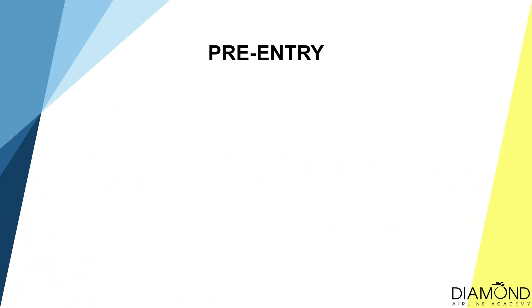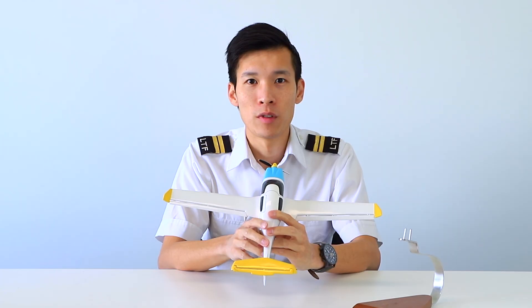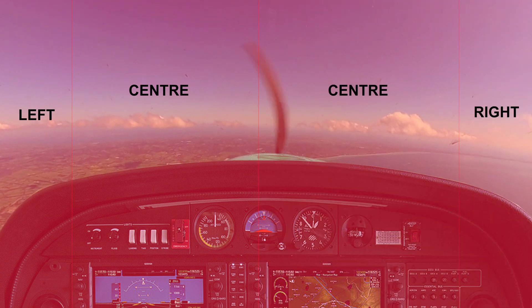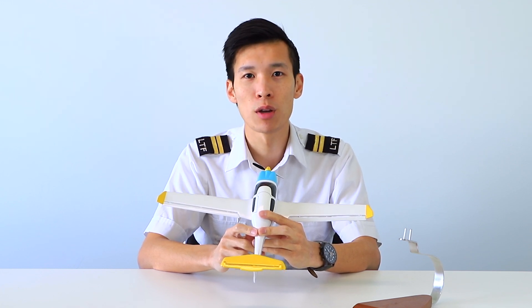Now let's go through the work cycle for pre-entry in a descent. The pre-entry cycle is HAL. H — Heading: during our descent we are trying to descend in a straight line, so we set our current heading to the heading bug to remind ourselves what heading to maintain. A — Altitude: we set the altitude we want to descend to on the altitude bug. L — Lookout: we clear the area before descent, looking left, centre, right, making sure there are no obstacles or other aircraft in the way. After that, we move on to the entry cycle.